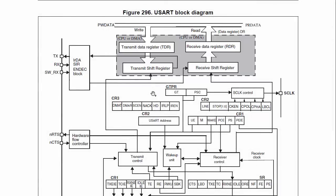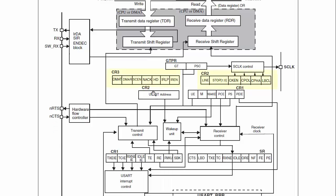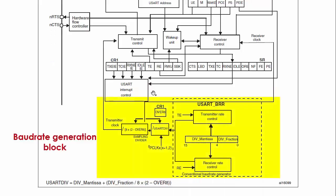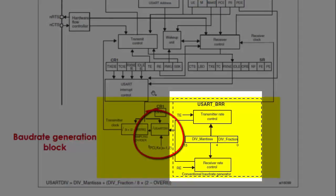There are a couple of control registers having various control bits used to control the transmission block as well as the receiver block. This is the baud rate generation block, which is used to generate the proper baud rate for data transfer. The peripheral clock undergoes various divisions to produce the proper baud rate for data transmission.